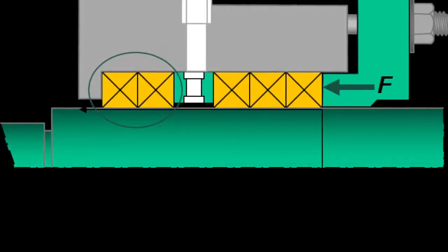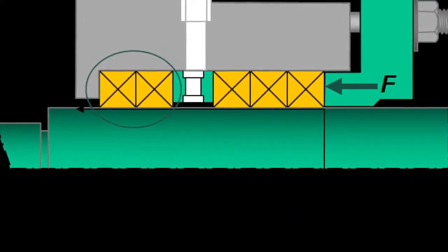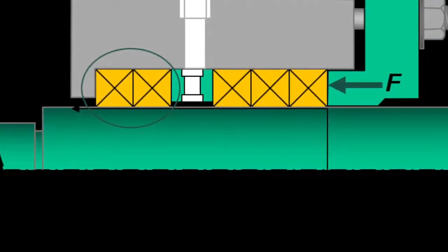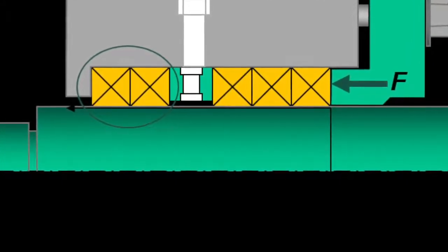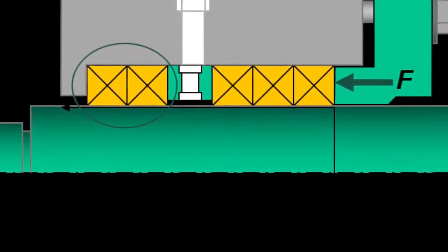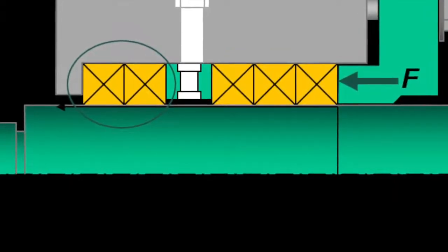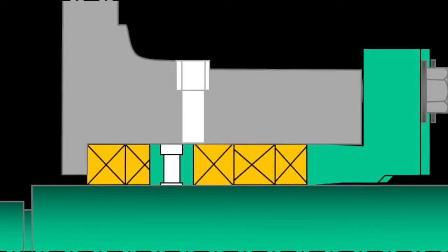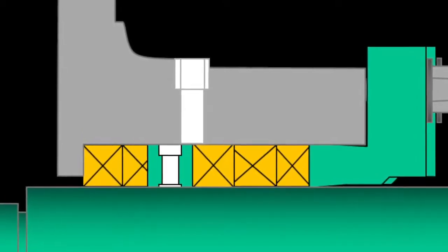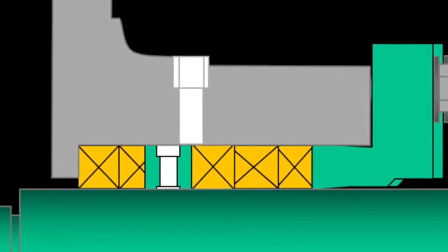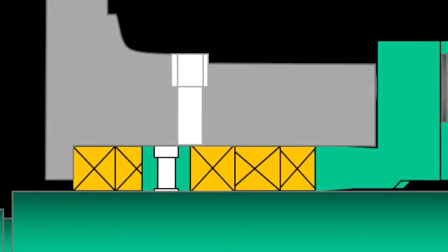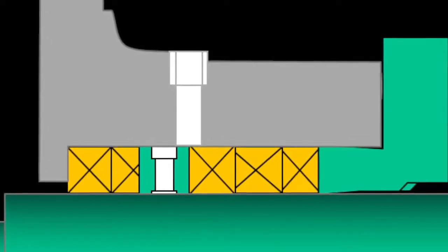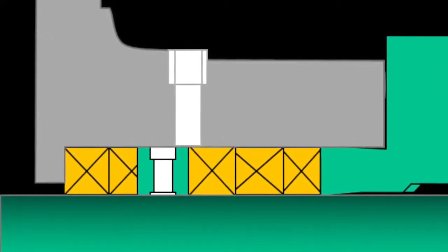Another major issue with lantern rings is the configuration inside the stuffing box. Many times there will be a set of packing below the lantern ring. These rings below are often forgotten about when repacking and can cause the lantern ring to slowly move into the stuffing box further past the lantern ring port. When this happens flush water will spray out of the pump and at the same time is cut off stopping solids embedment.